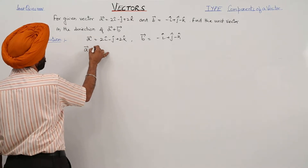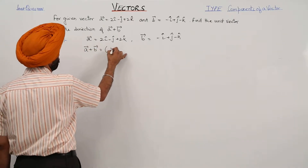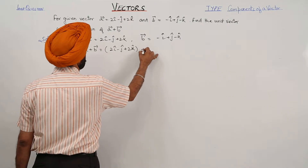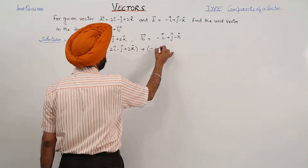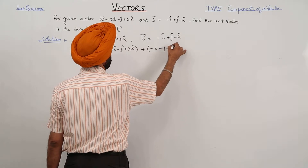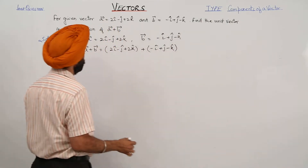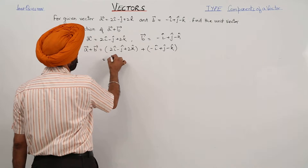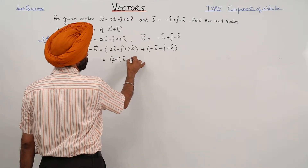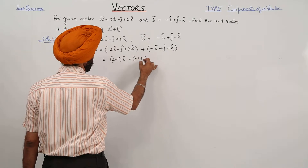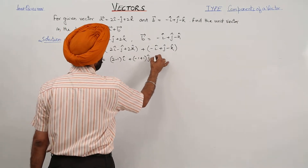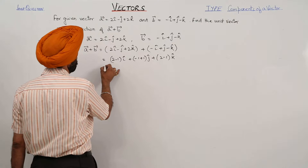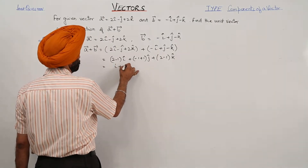Now for the summation of vector A and vector B, this becomes 2 minus 1 i cap plus 1 i cap plus j cap plus 2 minus 1 k cap.